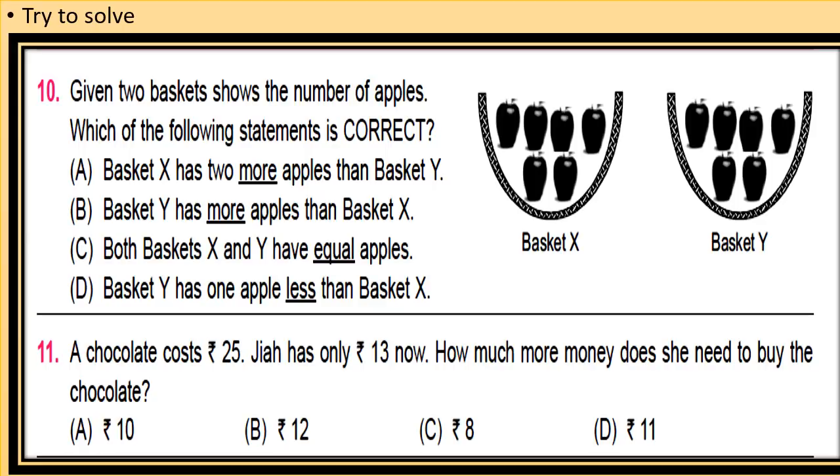C: both baskets X and Y have equal apples. D: basket Y has one apple less than basket X. Now first calculate the number of apples in basket X and Y and then choose the correct option.